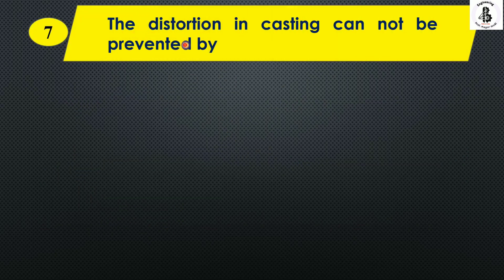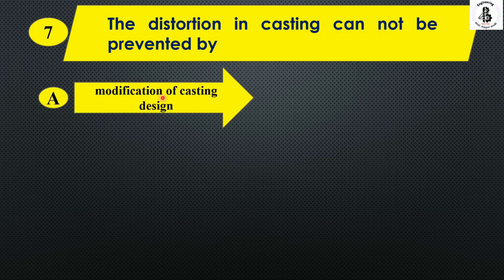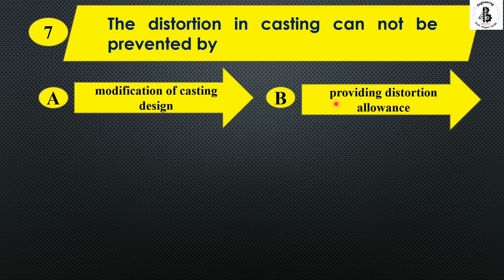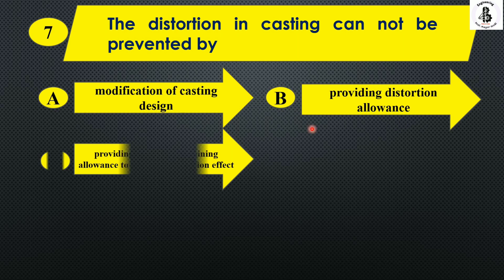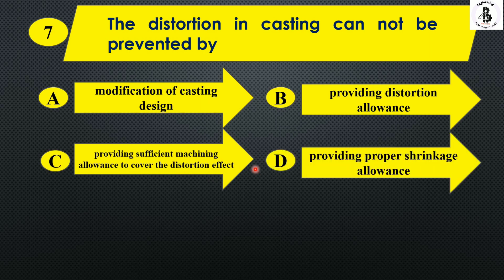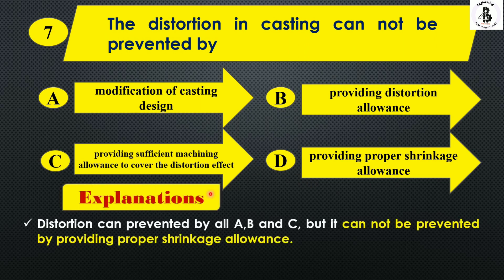Next: distortion in casting cannot be prevented by — option A modification of casting design, option B providing distortion allowances, option C providing sufficient machining allowance to cover the distortion effect, and option D providing proper shrinkage allowances. Distortion can be prevented by options A, B, and C, but cannot be prevented by providing proper shrinkage allowances. So the right answer is option D.